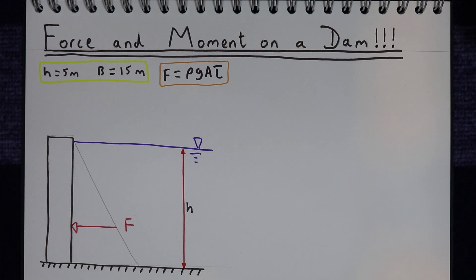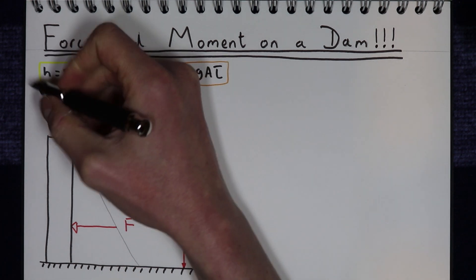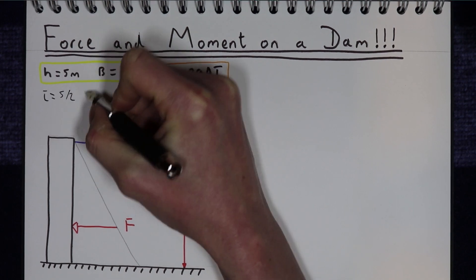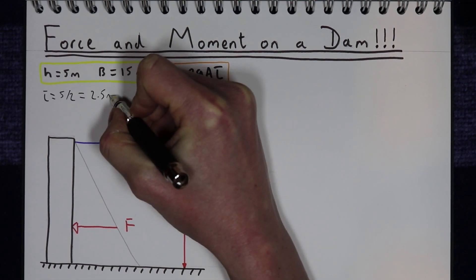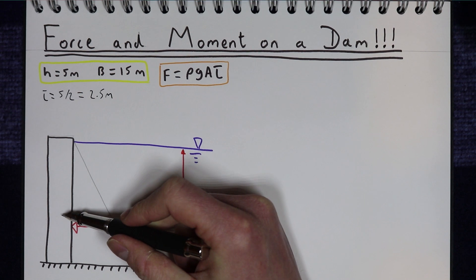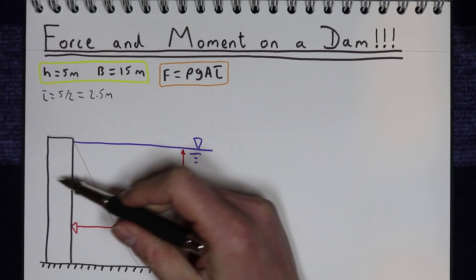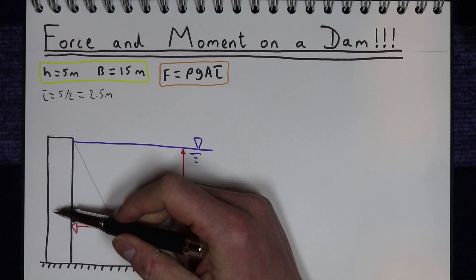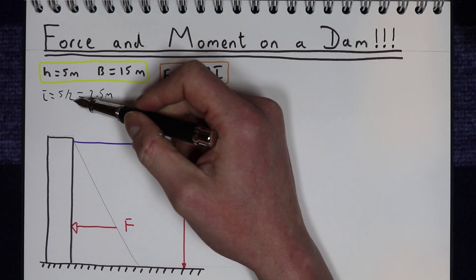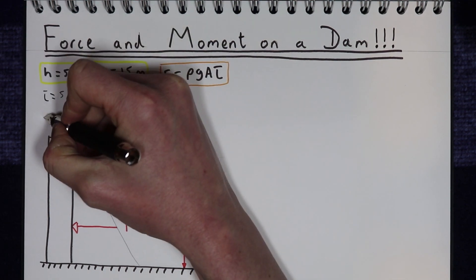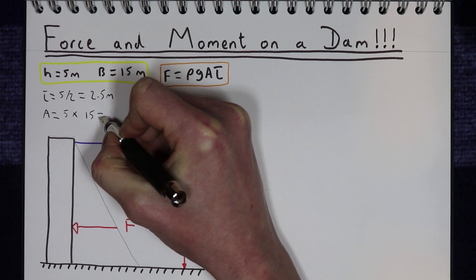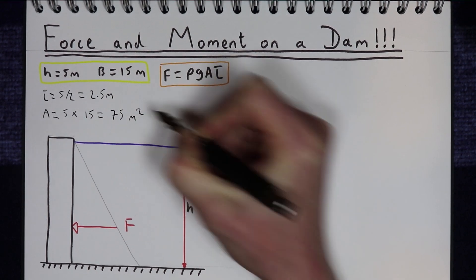For a rectangular surface, the centroid is just half of the total depth. So the centroid is 5 over 2, which is 2.5 metres. The total force on the dam is the average pressure times the area of the dam — the average pressure being ρ times g times the centroid, which is half the depth. The area of the dam is 5 metres times 15 metres, which is 75 metres squared.